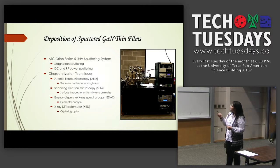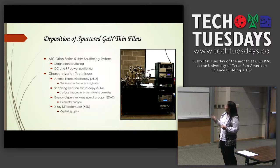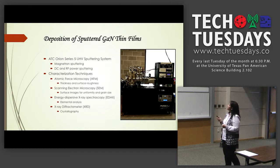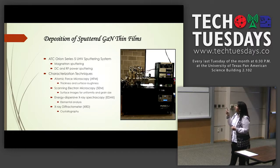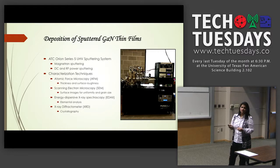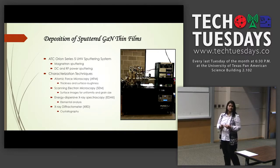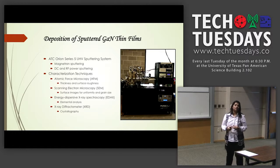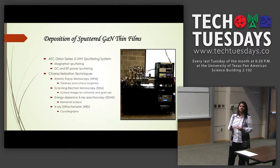The sputtering machine we have is in the engineering building's high bay area. It has a sputtering chamber, DC and RF voltage sources, and temperature control — we can go up to 850 degrees Celsius. Temperature is a very important parameter for the fabrication process.